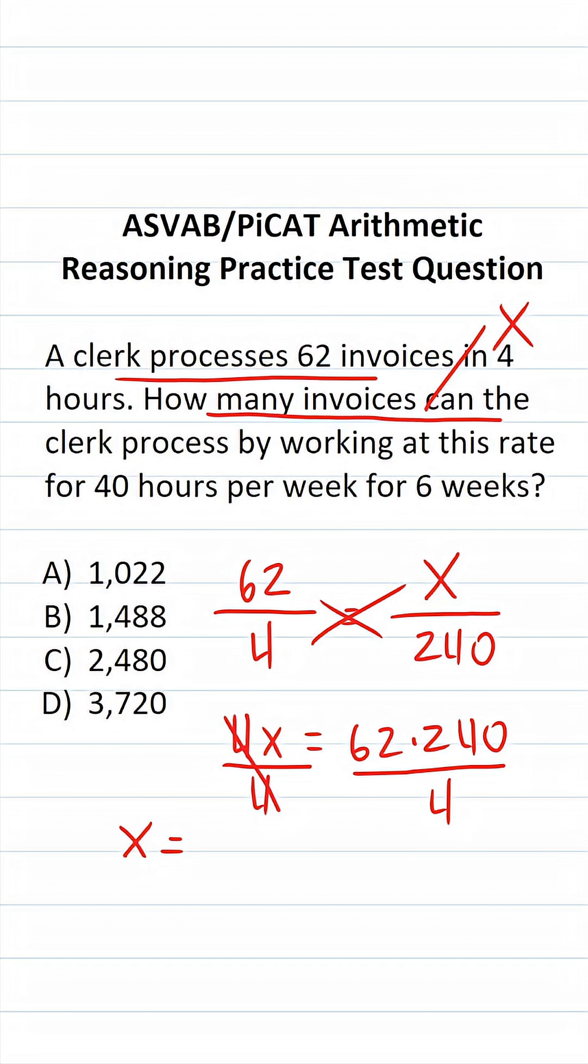4 can be written as 1 times 4. So I can actually break this apart to be 62 over 1 times 240 over 4. These two things here and here are equivalent. And why did I do that? It makes this math very manageable.